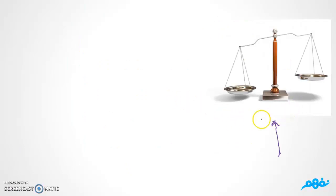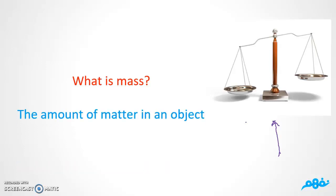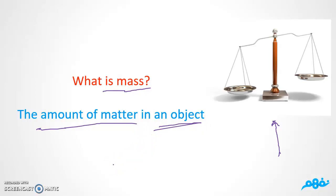Look at this picture — you have a balance here. What is mass? Mass is the amount of matter in one object. For example, if I have three apples, I don't say my mass is three apples. Instead, I say I have, for example, five hundred grams of apples or six hundred grams of apples, etc.